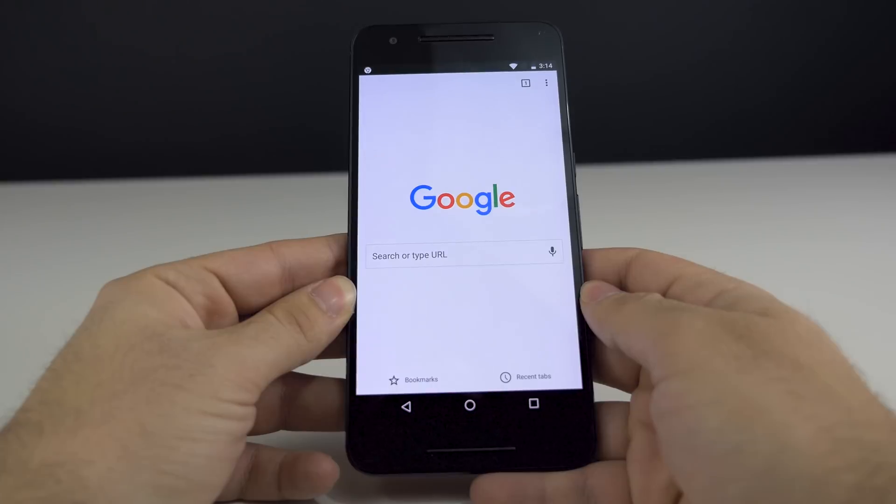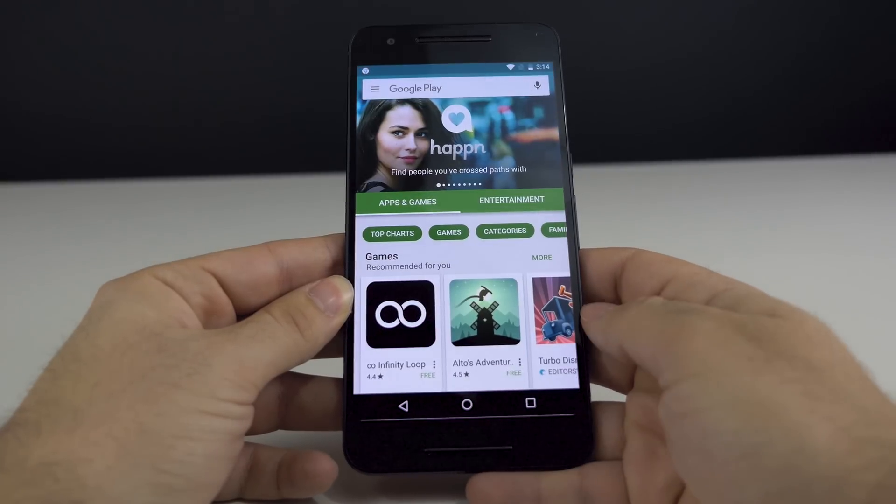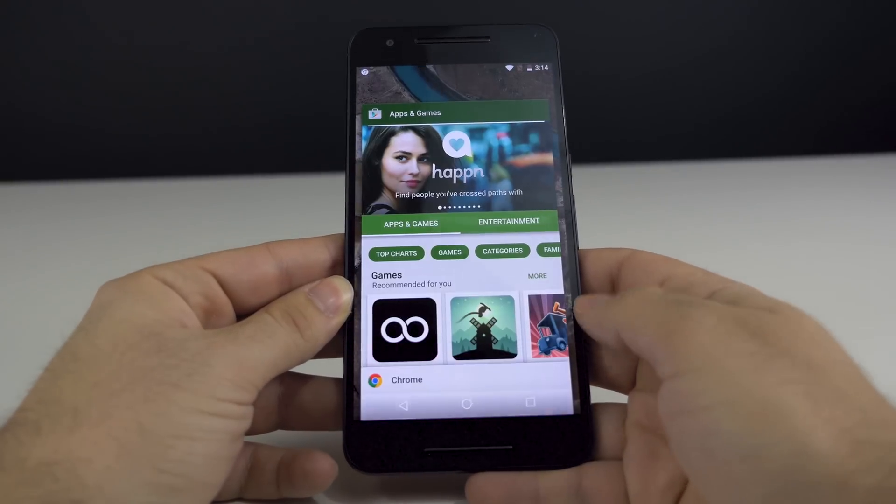I'm also really excited for the ability to quick switch between two apps with just a quick toggle of a button. That's actually also available in the Android N beta developer preview as well, which is pretty awesome.